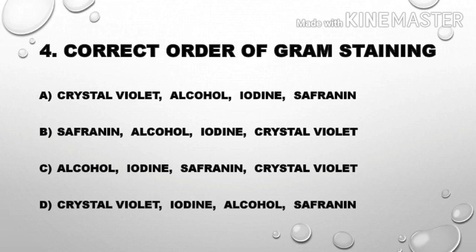Next question: What is the correct order of gram staining? Crystal violet is the primary stain, then iodine as the mordant, then alcohol as the decolorizer, then safranin as the counterstain. The correct order is: crystal violet, iodine, alcohol, safranin.